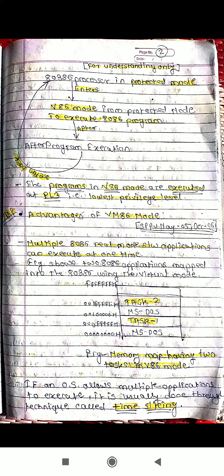To summarize the process: the 80386 is first in protected mode. It then enters into the V86 mode after setting the VM bit of the flag register. Once the processor enters the V86 mode, it executes 8086 programs. After executing 8086 programs, it will again return back to the protected mode.